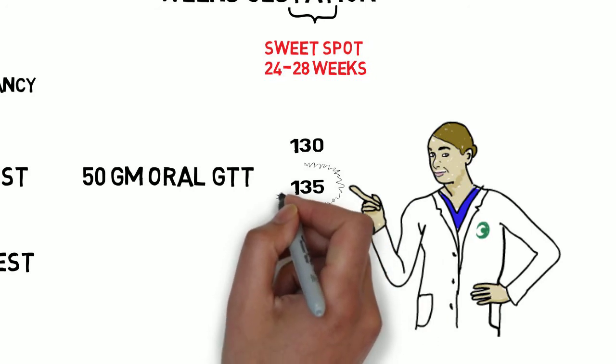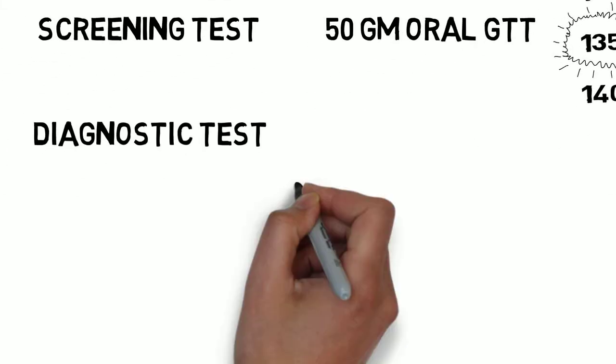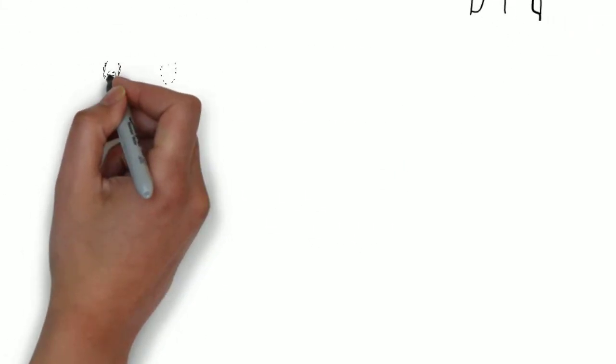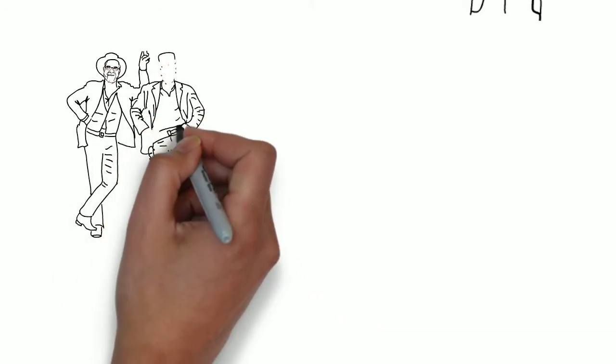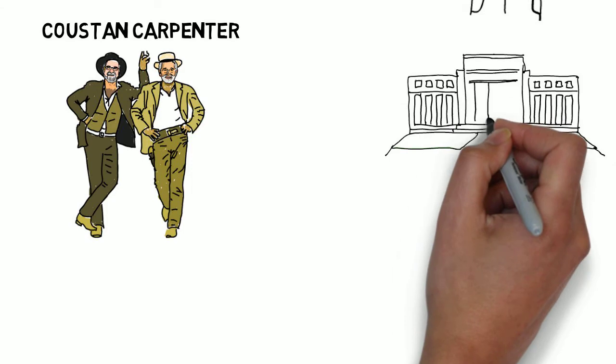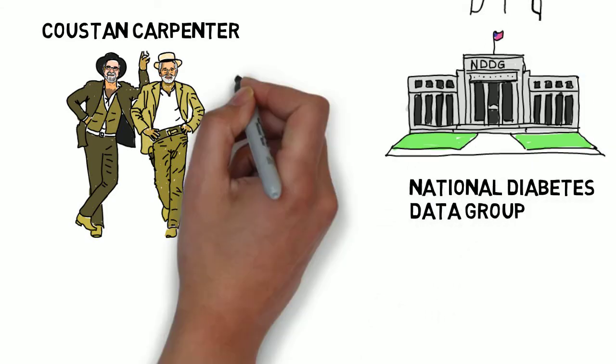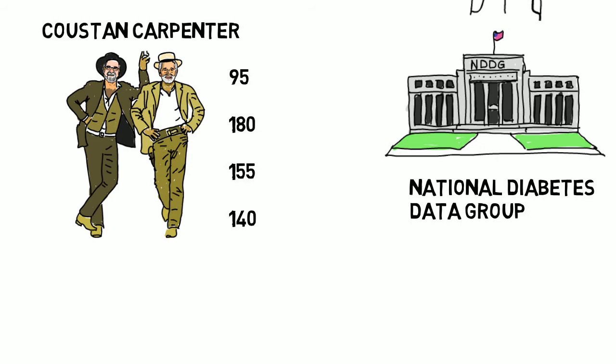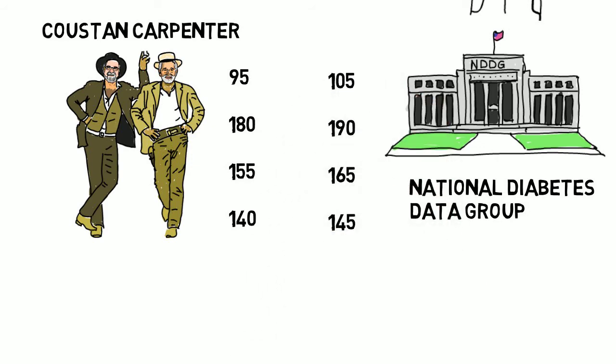In the high-risk clinic at Christiana Care Hospital, the cutoff is 135. The two most common cutoffs for the three-hour diagnostic test are the Carpenter-Kustan Protocol and that of the National Diabetes Data Group. The Carpenter-Kustan criteria result in about 50% more diagnoses of gestational diabetes. We, here at Christiana, use the Carpenter-Kustan Protocol.